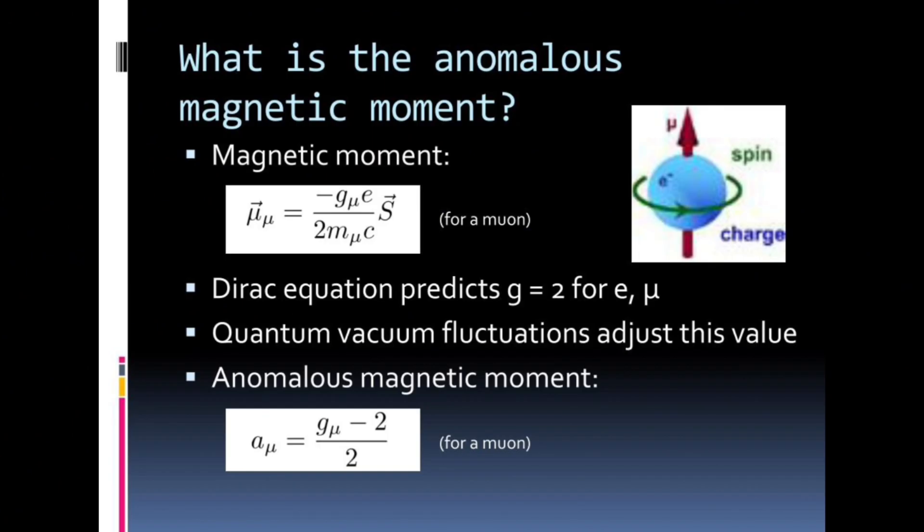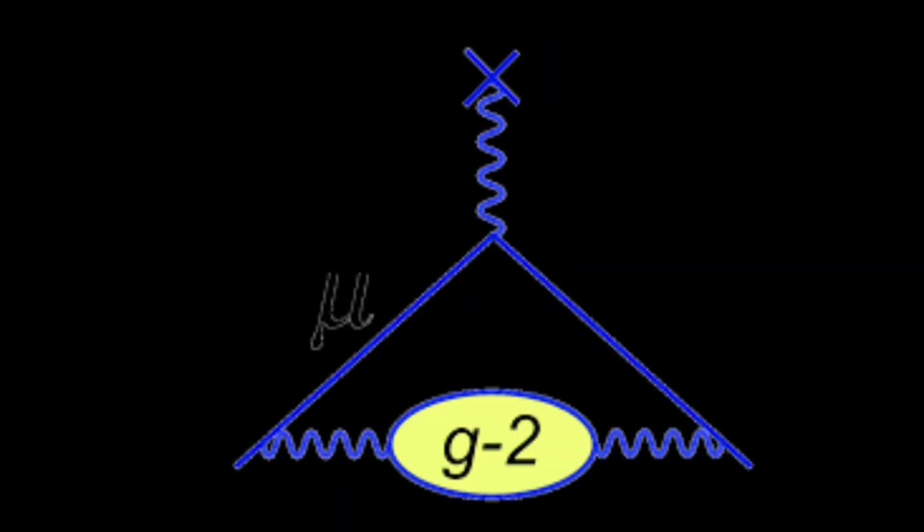Recent measurements from the muon g-2 experiment at Fermilab have corroborated previous results, increasing the precision of the muon's magnetic moment measurement to an error of just one part in 5 million. This has strengthened the case that the anomaly is real and not a statistical fluke or an experimental error.